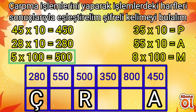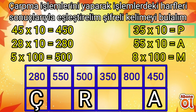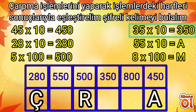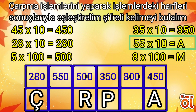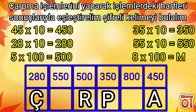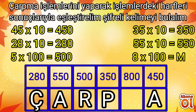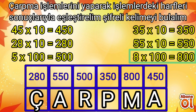Sırada 3 tane işlemimiz daha var. 35 ile 10'u çarpalım: 35'i aynen yazıp 10'daki bir sıfırı ekliyoruz; sonuç 350'dir. 350'yi tabloda bulup P harfini oraya yazıyoruz. Sırada 55 çarpı 10 işlemi var: 55'i yazıp 10'daki bir sıfırı ekliyoruz; sonuç 550'dir. A harfini 550'nin altına yazıyoruz. Son olarak 8 çarpı 100: 8'i yazıp 100'deki iki tane sıfırı 8'in sağına ekliyoruz; sonuç 800'dür. 800'ün altına M harfini ekliyoruz.